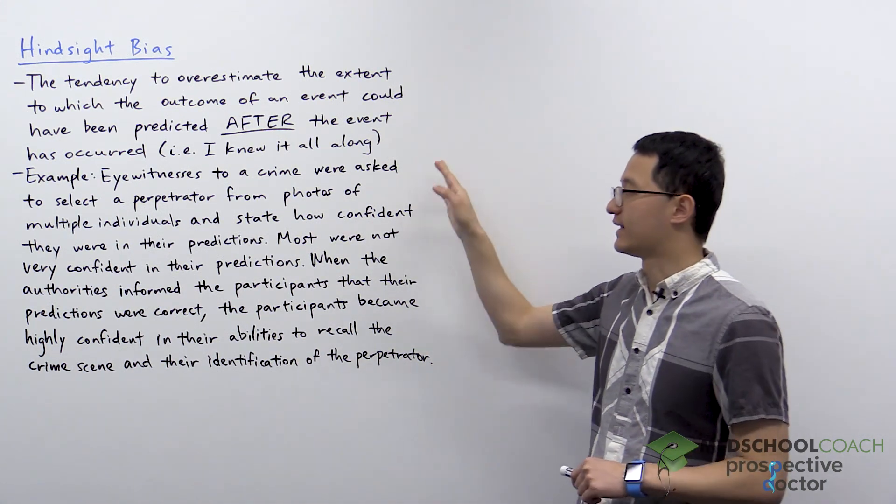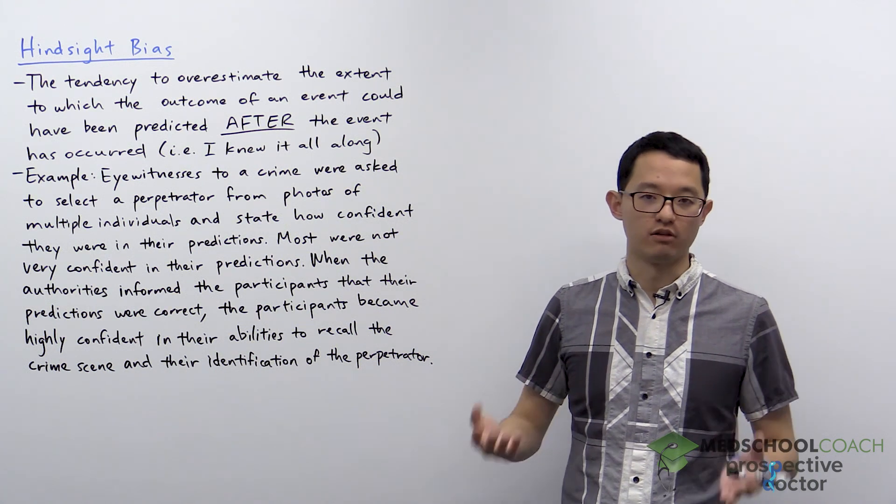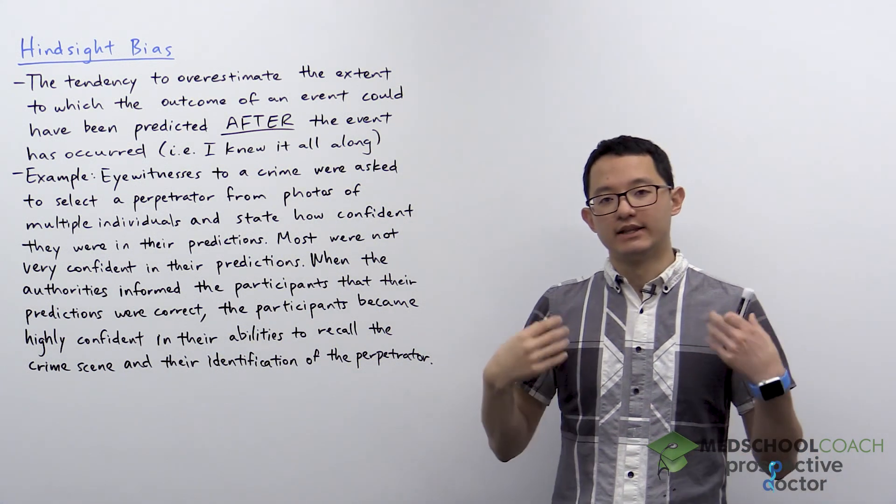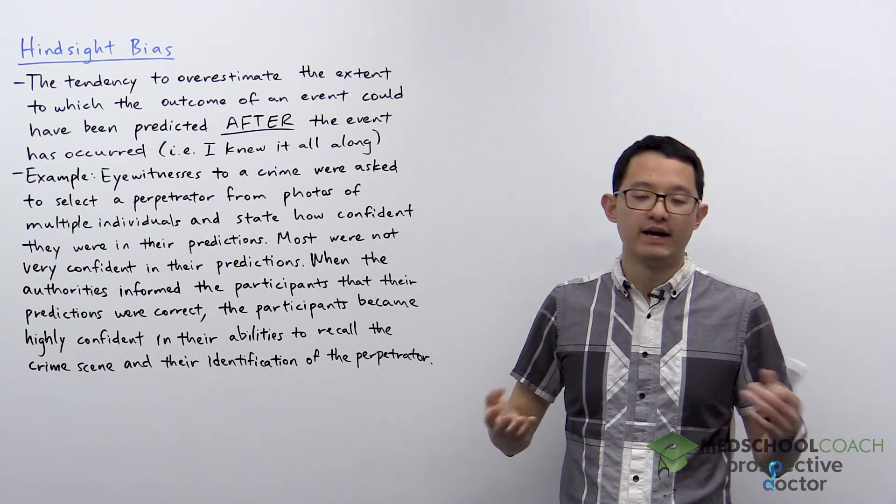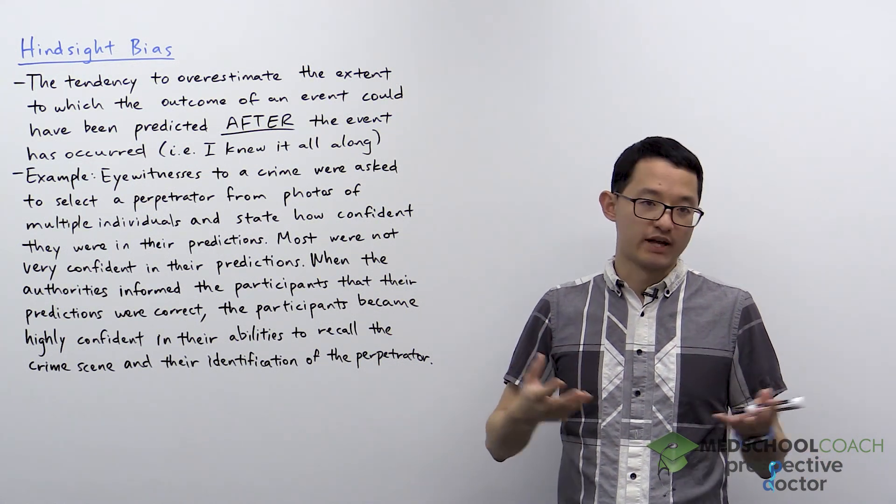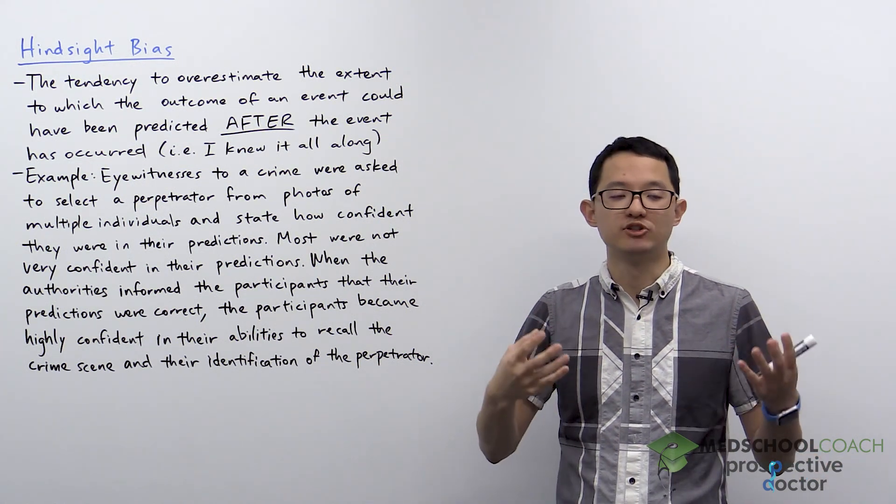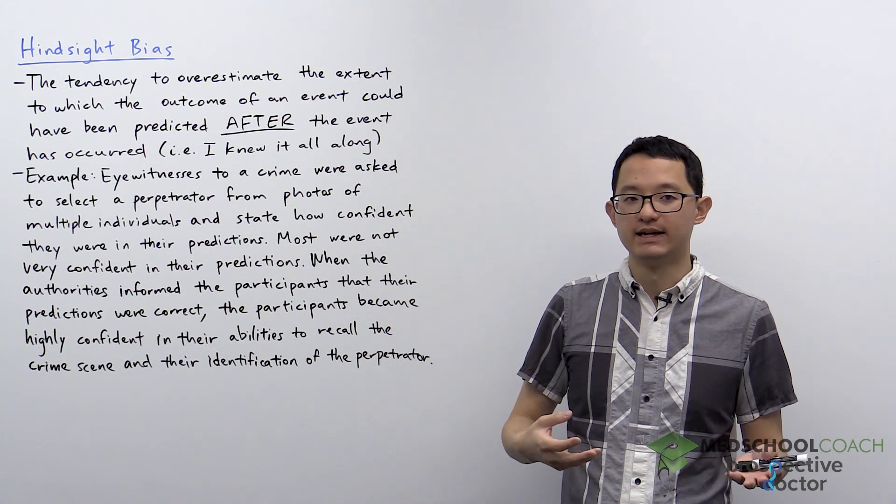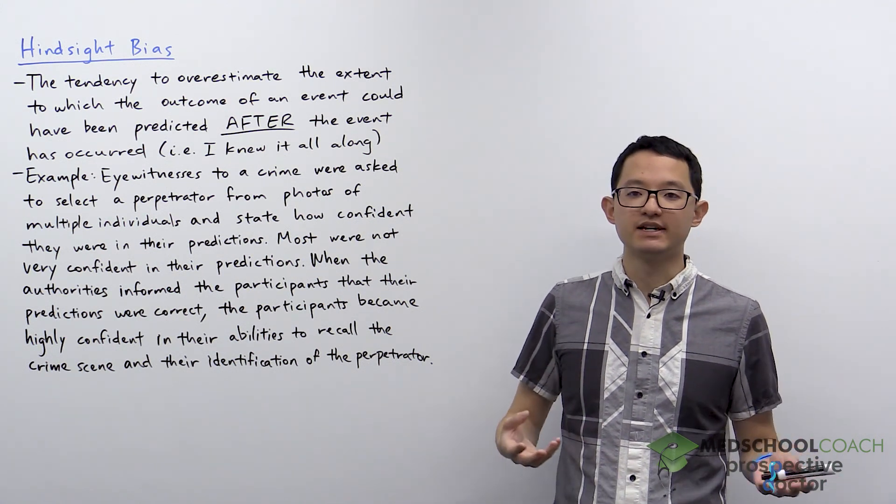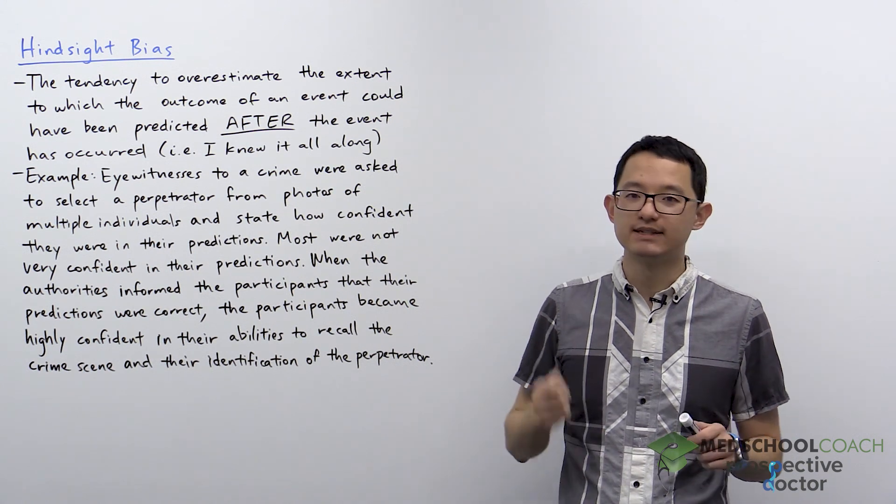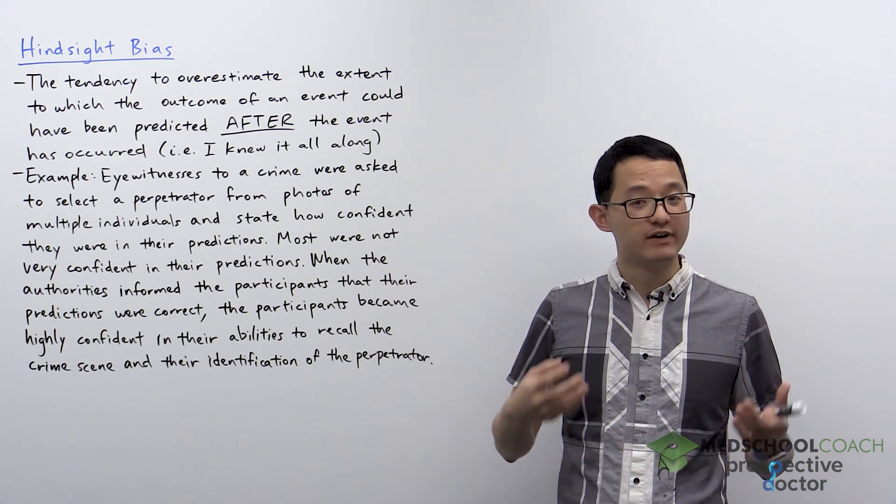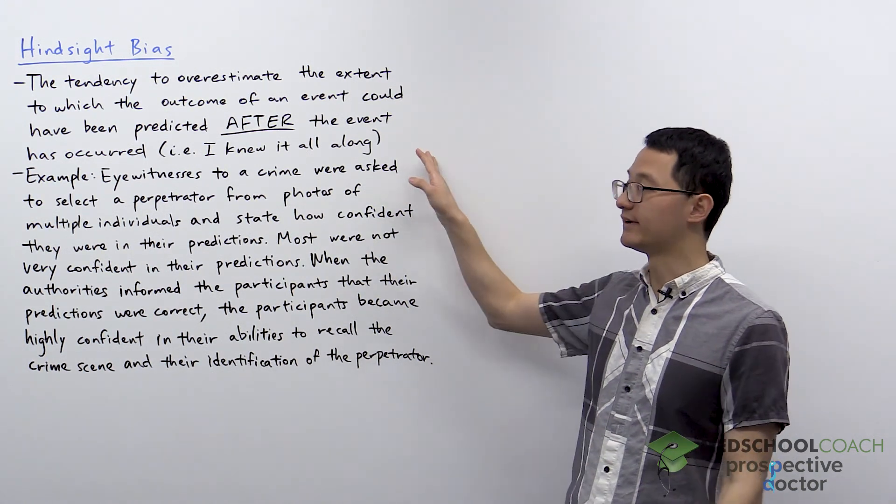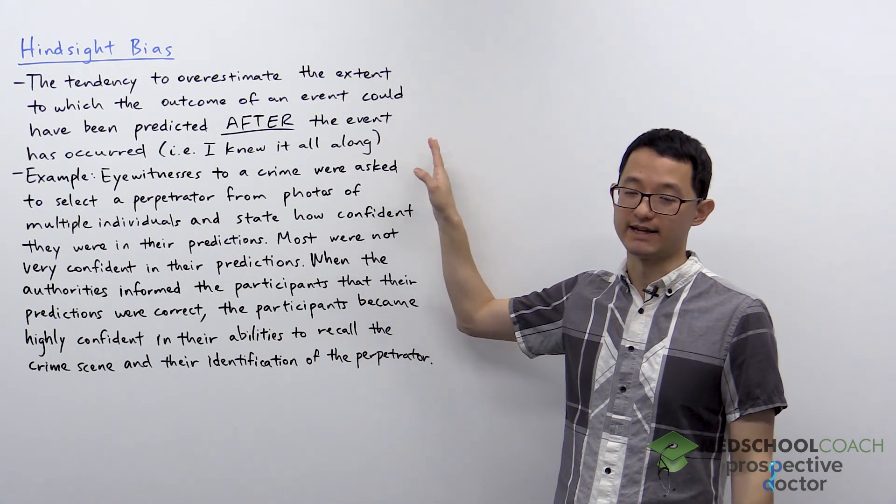This is often thought of as 'I knew it all along.' The idea could be you're watching a TV show and you don't really know what's going to happen next, but then some dramatic event occurs and afterwards someone says, 'Oh, I knew that was going to happen, I predicted it a long time ago.' They're very confident in their abilities to predict the event after it has occurred.